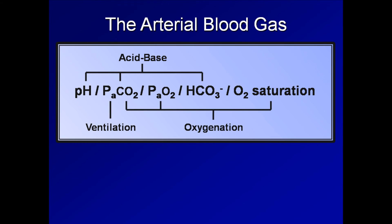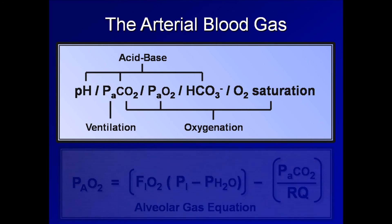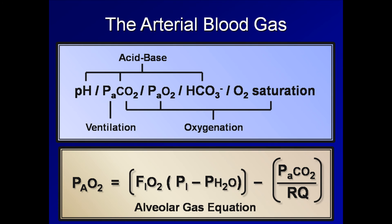Finally, the PaCO2, PaO2, and the O2 saturation tell us about the patient's oxygenation. The alveolar gas equation allows one to calculate the alveolar oxygen tension, denoted here as PAO2. The difference between the calculated PAO2 and the measured PaO2 is an important physiologic parameter known as the A-a gradient, which provides important information regarding the adequacy of a patient's alveolar arterial membrane through which oxygen and carbon dioxide diffuse.